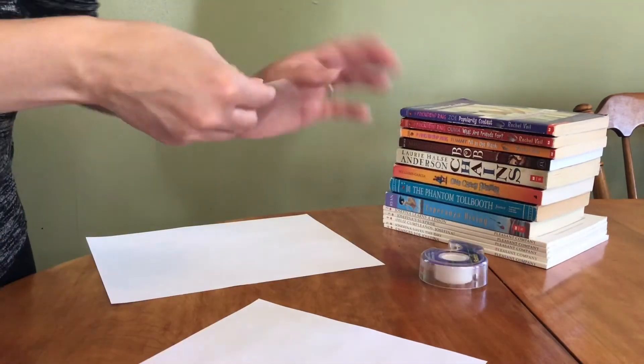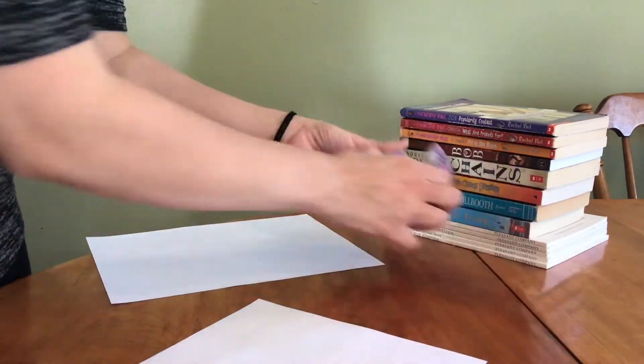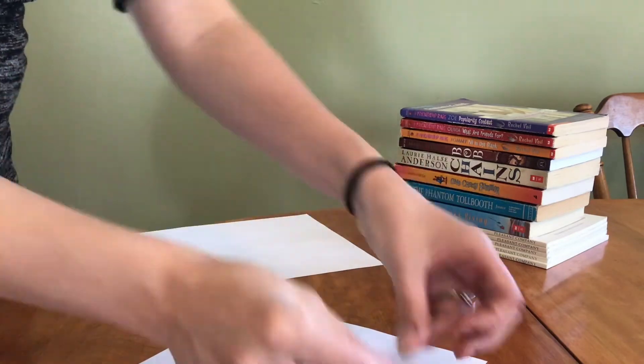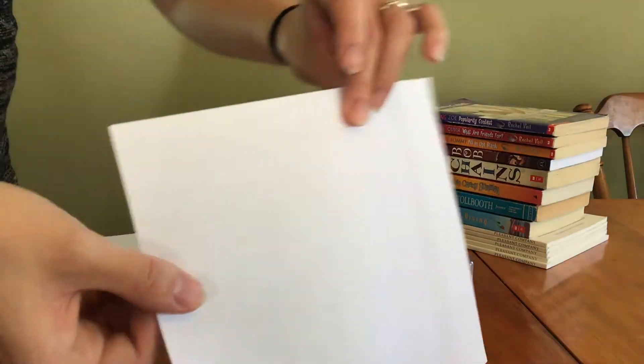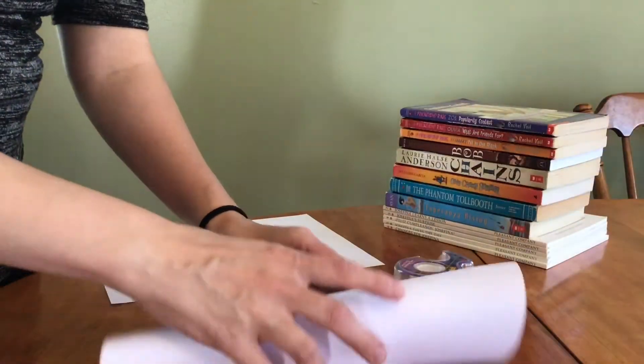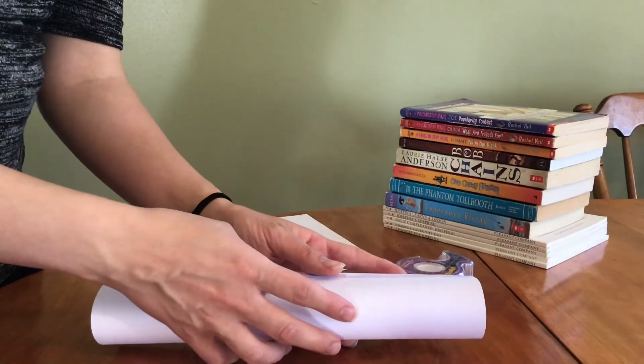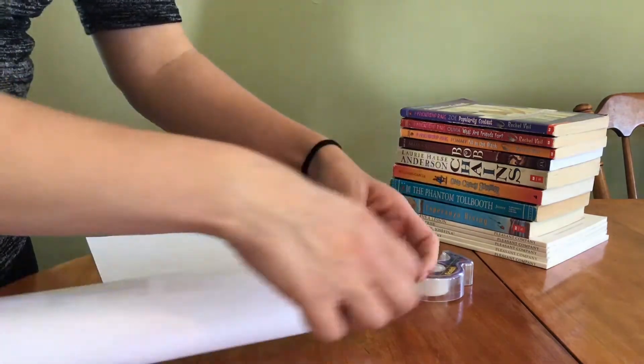Now we're going to make our cylindrical shaped column. I found the easiest way to make this column was to lay the paper flat and tape it along one of the long edges. Then take those two edges and put them together.